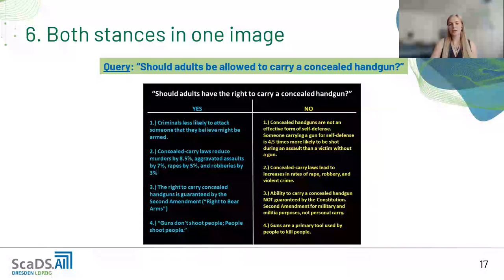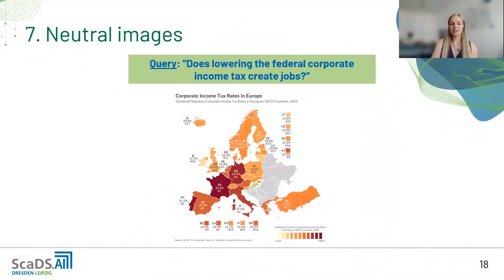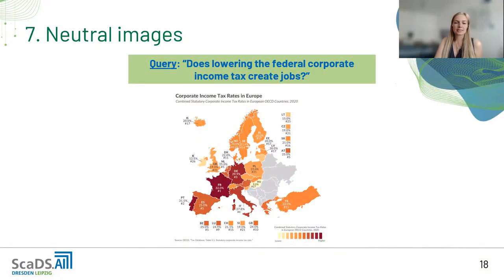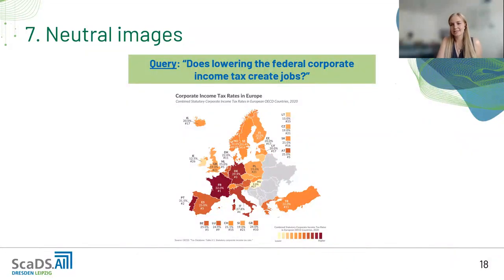The same applies to neutral images — some images contain a lot of relevant information and can be used as an argument, but cannot be assigned a stance. For example, for 'does lowering the federal corporate income tax create jobs,' you could post a diagram and argue it either way. It is argumentative but clearly neutral, and we found this often with diagrams and maps.